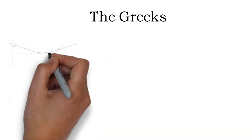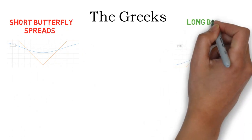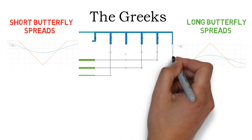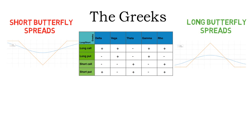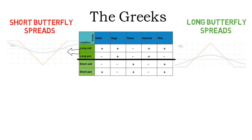One of the last things I want to present are the Greeks. The Greeks measure changes in the options price for different scenarios. Short and long butterfly spreads react differently to specific scenarios. This table shows the impact of the different Greeks on different option positions. The long options are the most valuable and thus most dominant options for short butterfly spreads, and that's why the Greeks for the long options are the relevant ones for short butterfly spreads. As the short options are the dominant ones for long butterfly spreads, they are the ones to look at for long butterfly spreads.